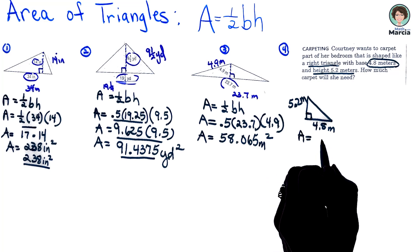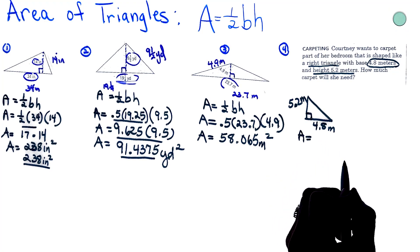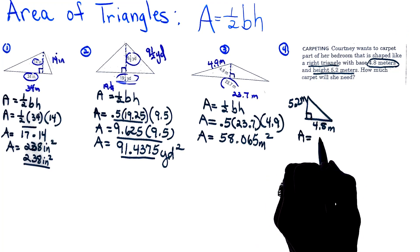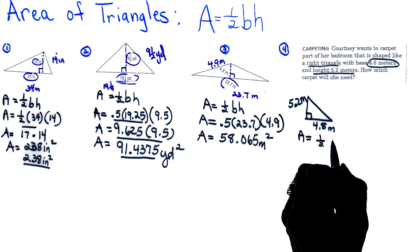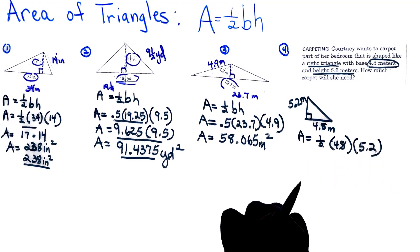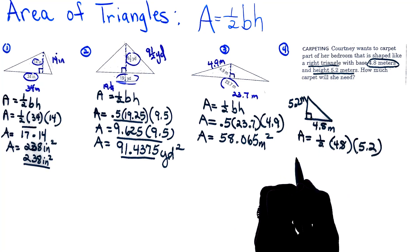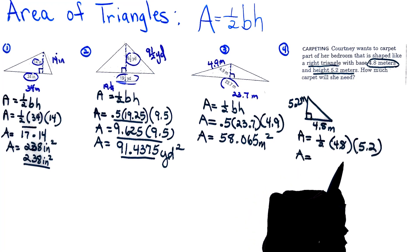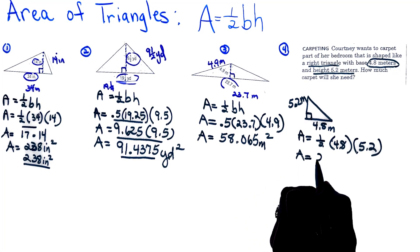Area is equal to one-half times our base, which was 4.8, and our height was 5.2. I could have written that as 0.5, and when I take one-half of 4.8, I get 2.4, and I'm going to be multiplying that by my 5.2, my height.